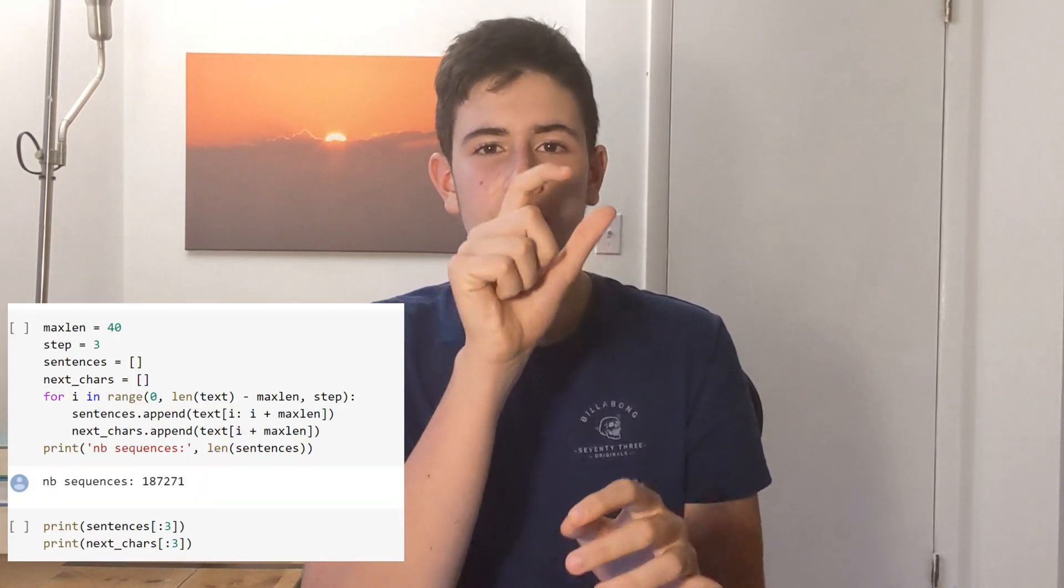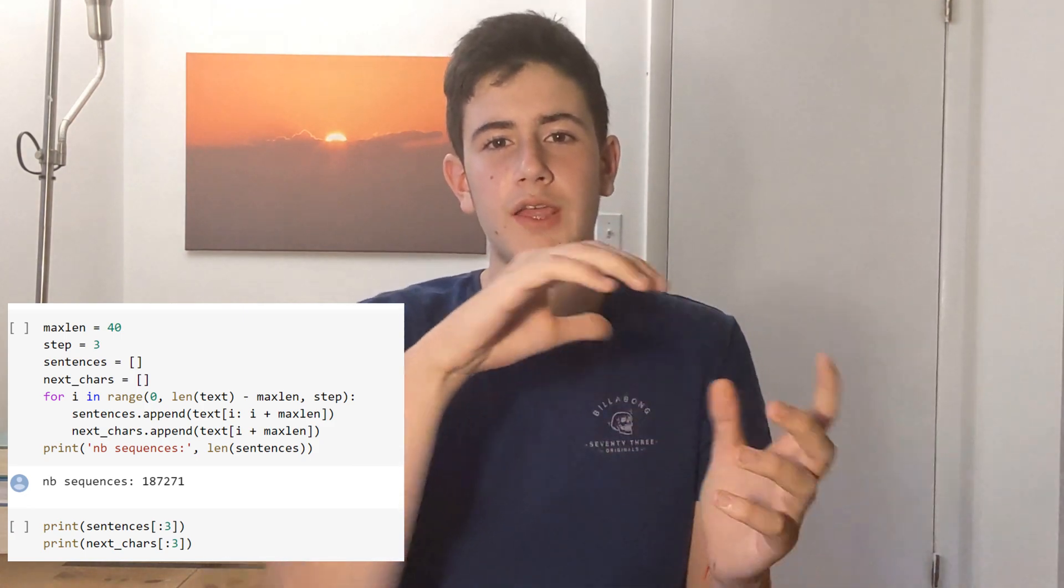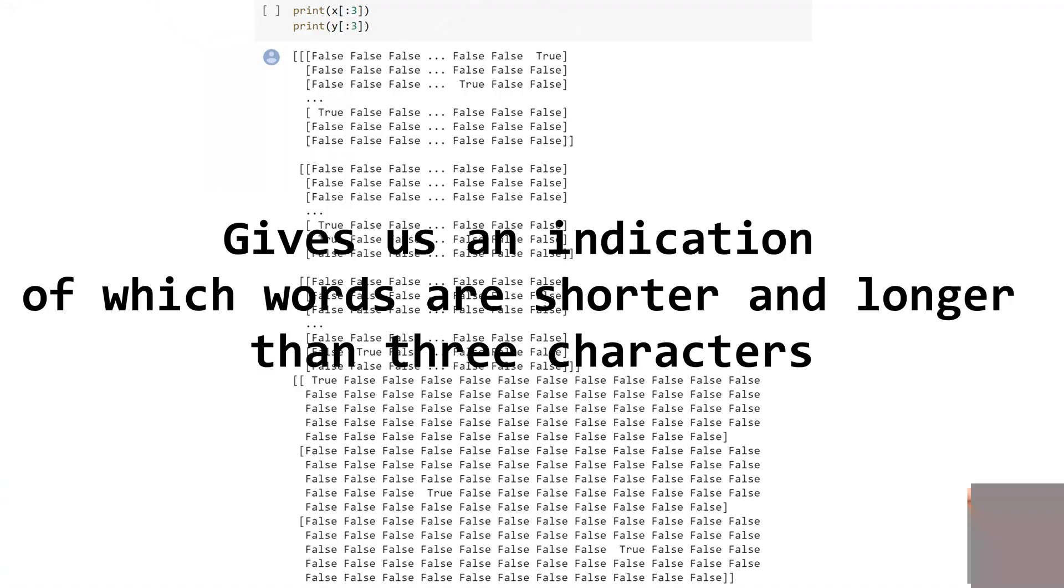So now, to be able to process our data, we want to split up our data like we would any other data set. Like we would split our data validation and test, but this is a little bit different. We're trying to split the data in bite-sized chunks so that the model will be able to read it. So we do that like so, and then we turn our data into a Boolean array.